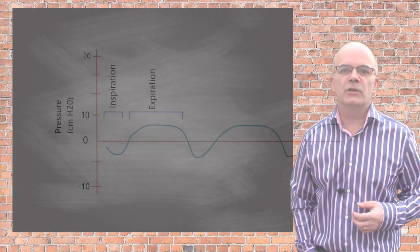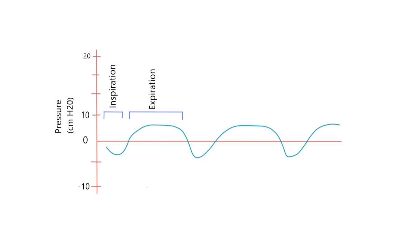Here we have a curve which shows the pressure in the alveoli compared to atmospheric pressure over time. During inspiration, the diaphragm descends, dropping the intra-alveolar pressure. Whenever intra-alveolar pressure is lower than atmospheric pressure, the gradient drives air into the lungs.